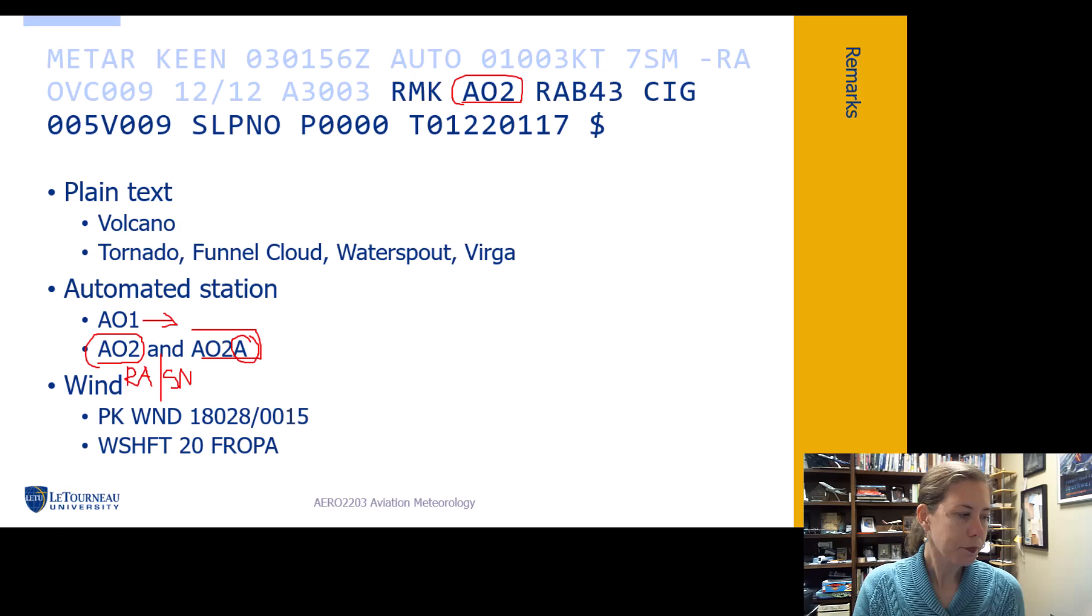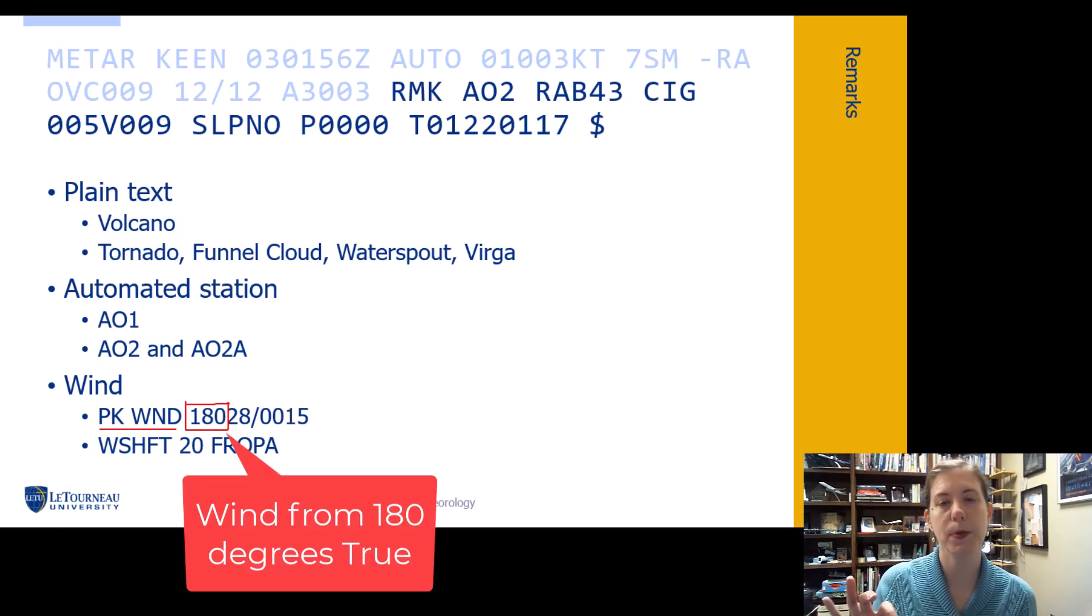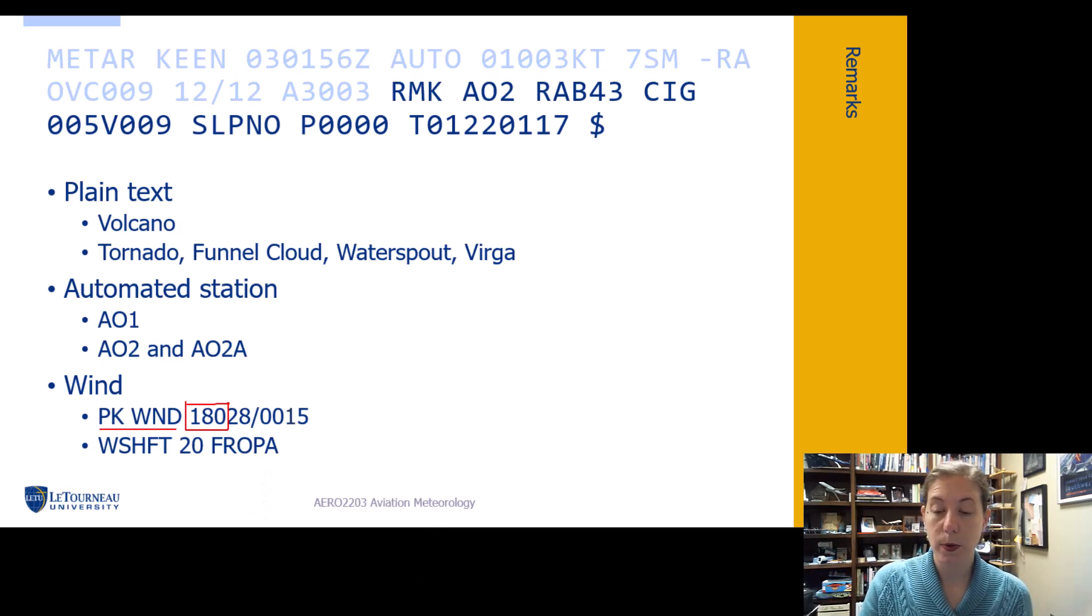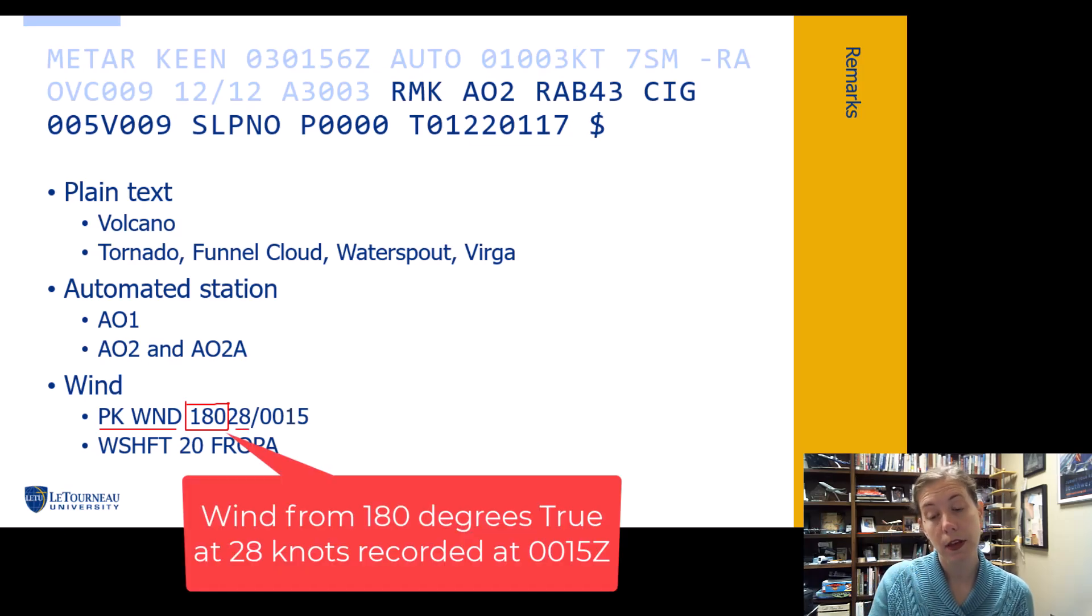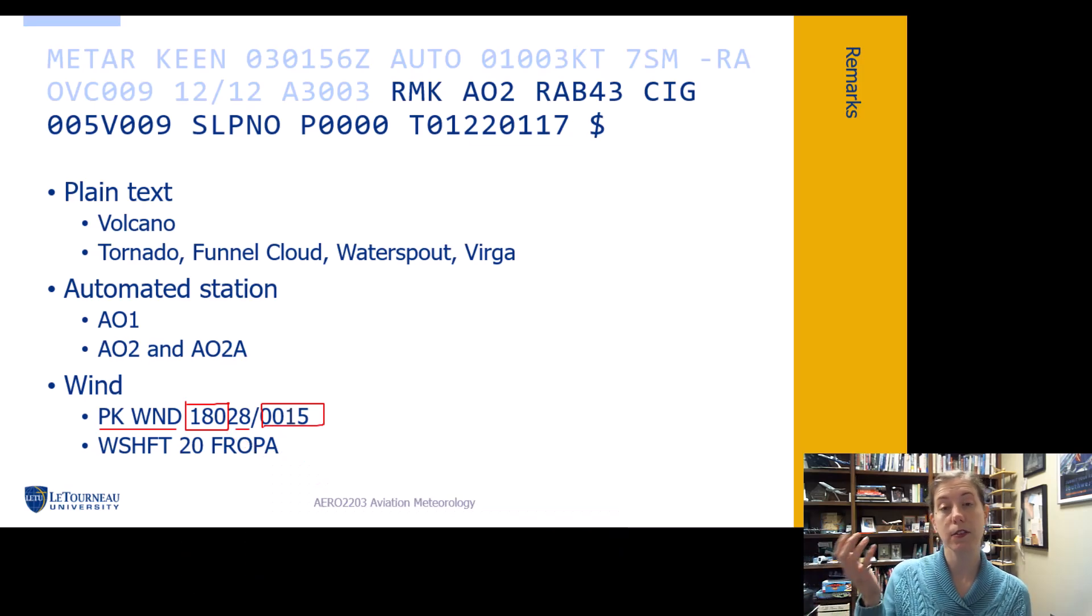Next thing that we sometimes get in this section, if we have some wind gusting going on, we will see peak wind remarks. So we'll have peak wind and then we get some information about what the wind had done. First we get a three digit group of the direction, again in degrees true. Typed text weather, T for typed text, T for true. And it's at 28 knots. So it was from the south at 28 knots. And then we get a time that that thing happened. So in this one it happened at 0015Z. So again we're going to UTC time which we always use.